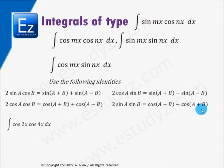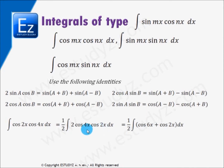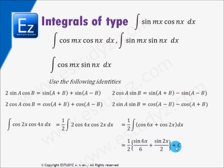Let us solve an example: the integration of cos(2x) · cos(4x) dx. We use 2 cos A cos B = cos(A+B) + cos(A−B). Taking 2 common outside the integration, and applying the identity, the expression reduces to (1/2) × integral of [cos(6x) + cos(2x)] dx, since 4x + 2x = 6x and 4x − 2x = 2x. This integration is now straightforward. The answer is (1/2) × [sin(6x)/6 + sin(2x)/2] + c.